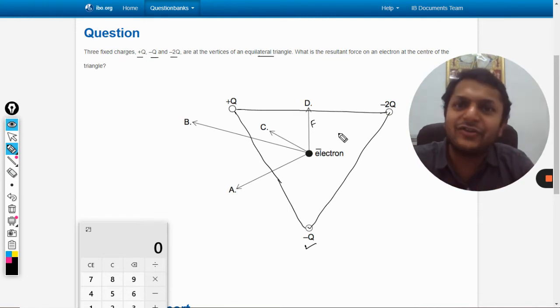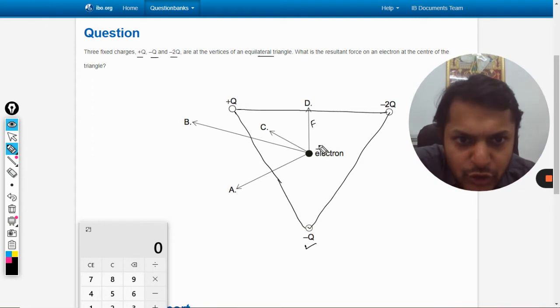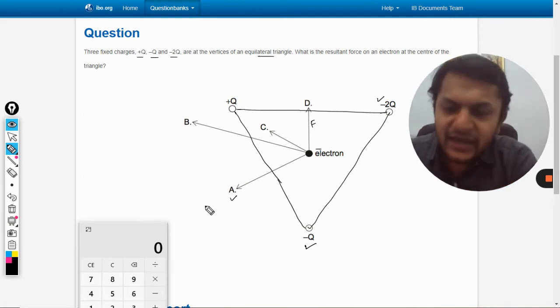What about this -2q? This is also negative, so they are repelling. The force that is shown by A is the repulsive force by -2q on the electron.